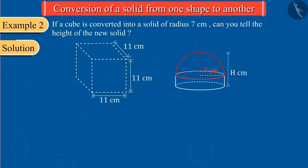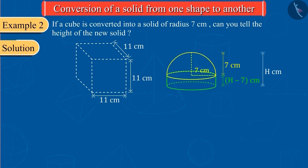For a hemisphere, its radius will be its height. So, what should be the height of the cylinder? Since the total height of the solid is H and the height of the hemispherical part is 7 cm, therefore, the height of the cylindrical part will be H minus 7.